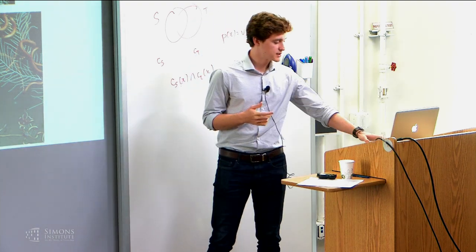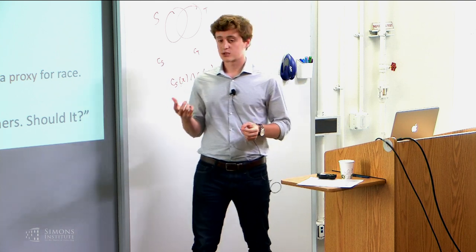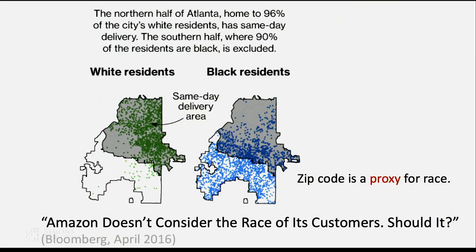We quickly realized this is a similar problem that we're trying to answer often in fairness. We're trying to audit the scenario when there are proxies for things we're interested in. For example, zip code is a proxy for race, and we're trying to understand what is driving decisions — this notion of indirect influence. In a case like redlining, we're curious: is race indirectly influencing my decisions, and how might I start to understand whether or not that's happening?